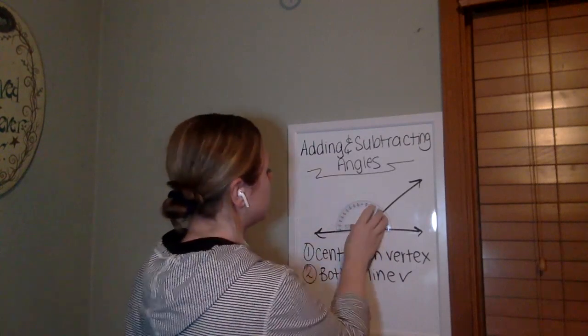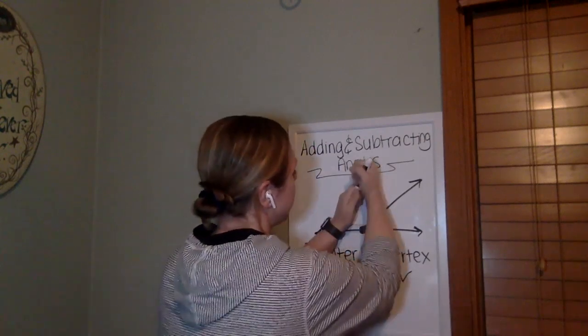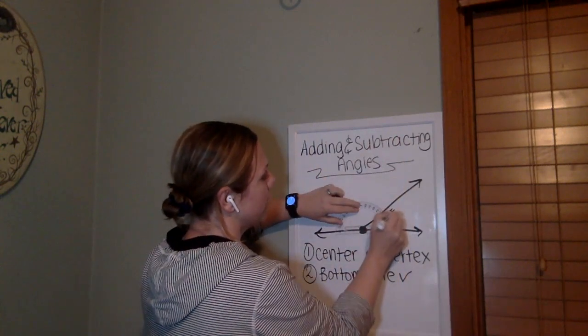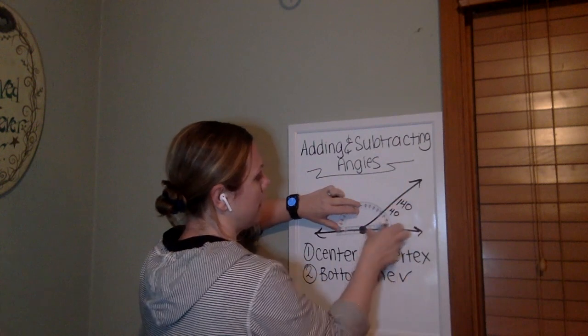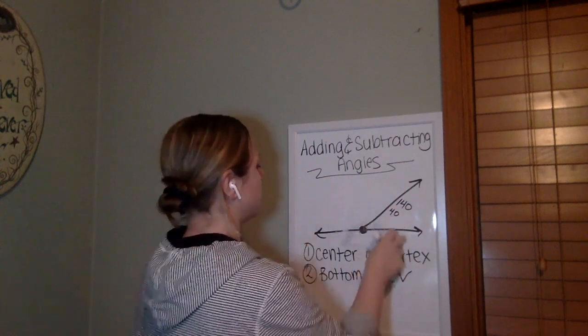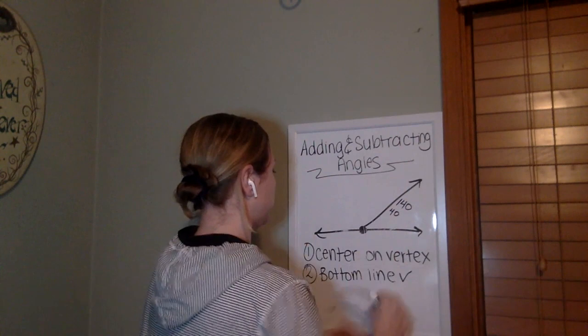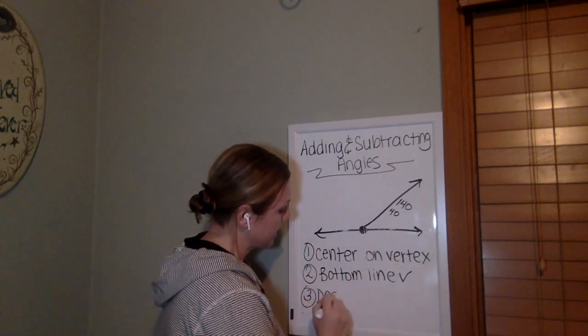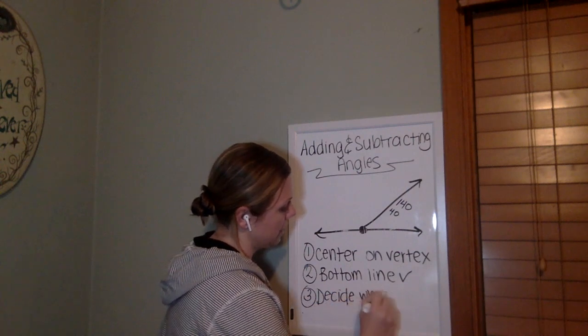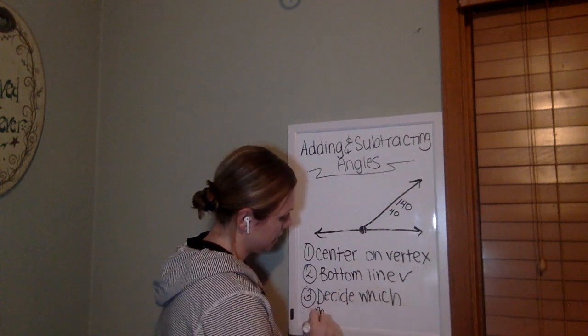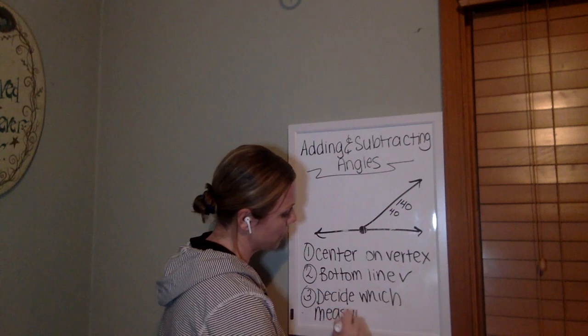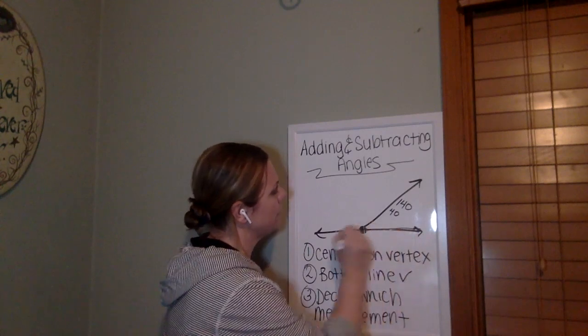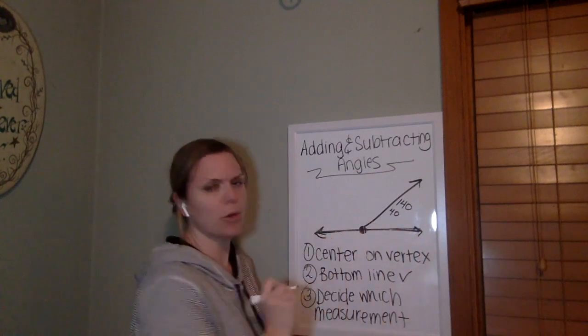Now I'm going to tell you right now, because it's a little bit too small for you to see, my protractor right here has two numbers. It has 40 and it has 140. So let's think about that for a second. So I need to decide which measurement to take. Am I taking my 140 or am I taking my 40? Why is it telling me both?